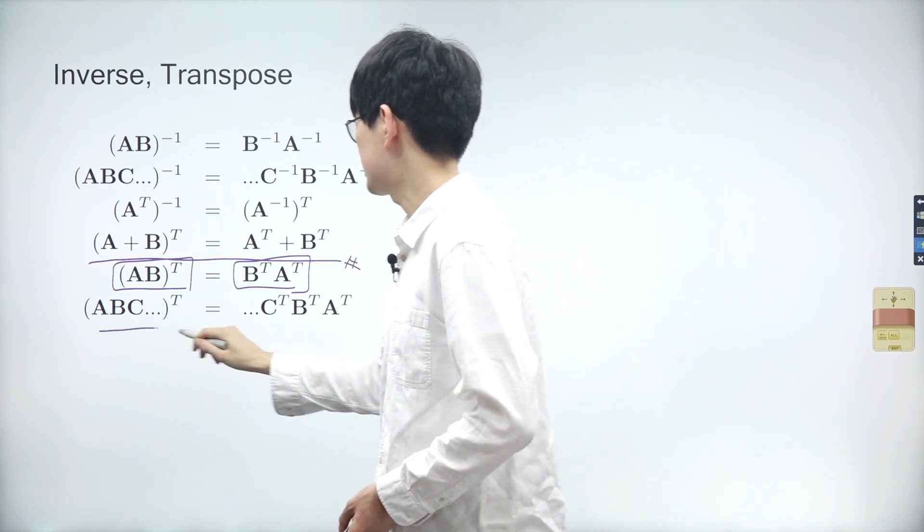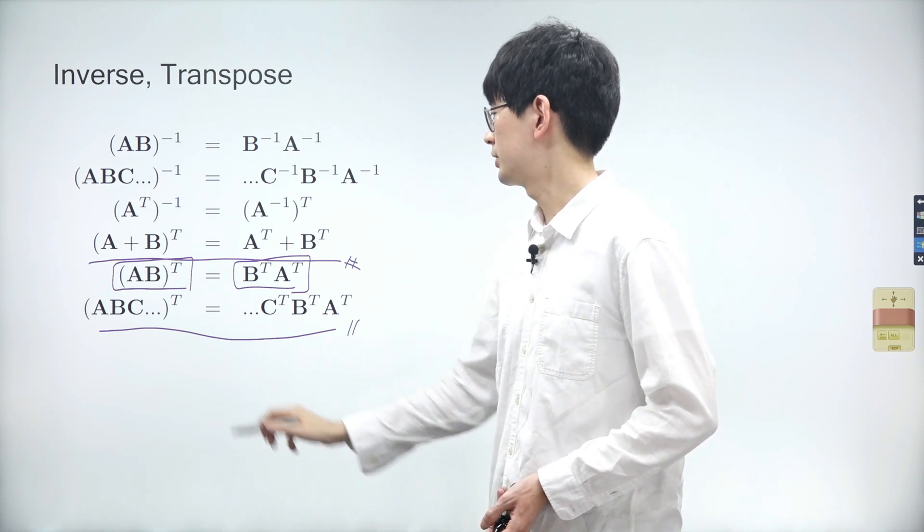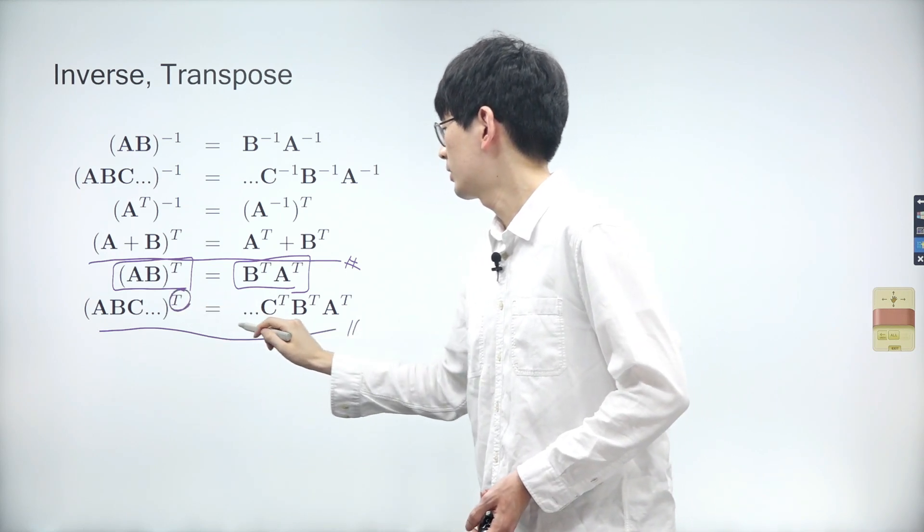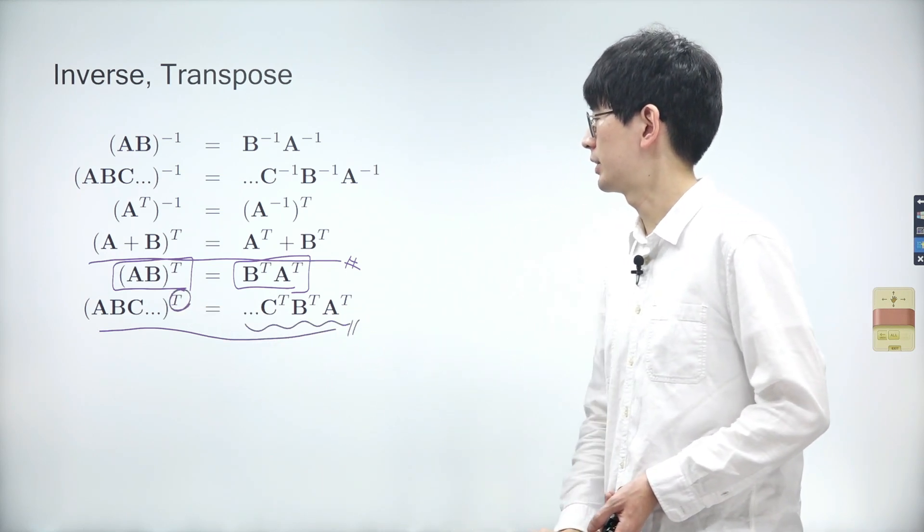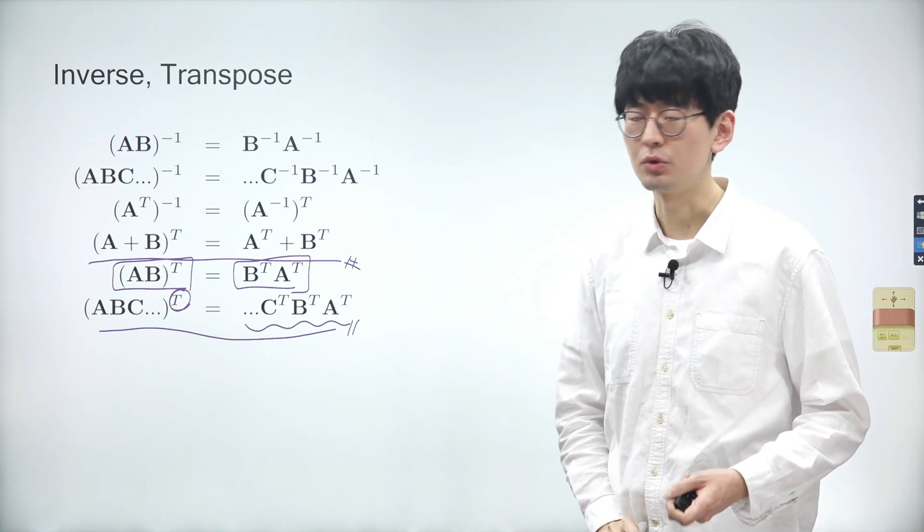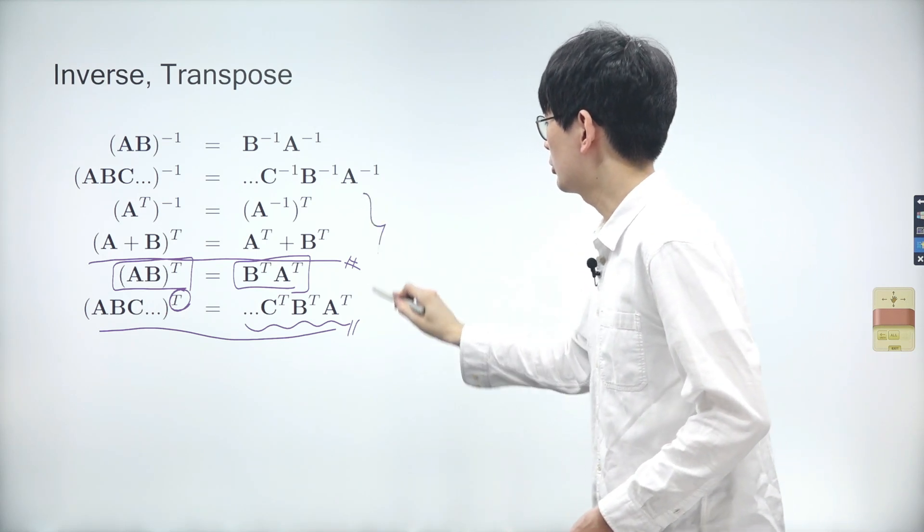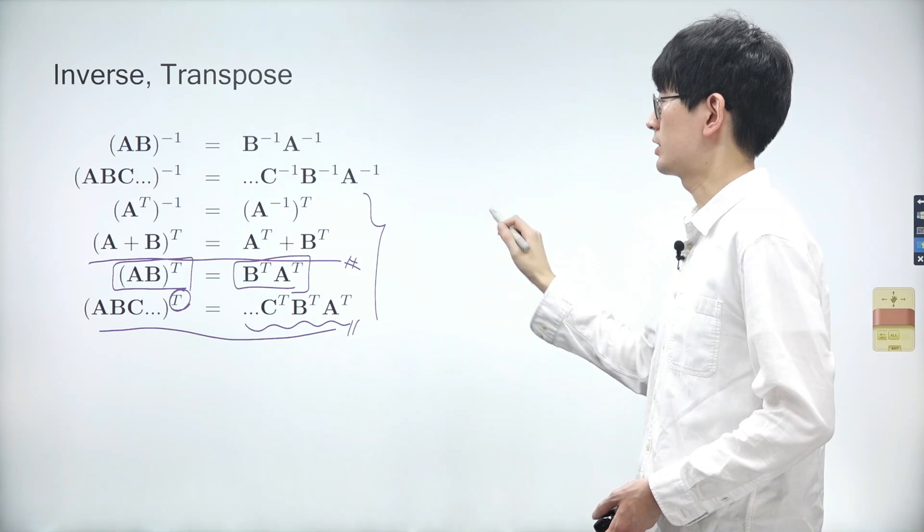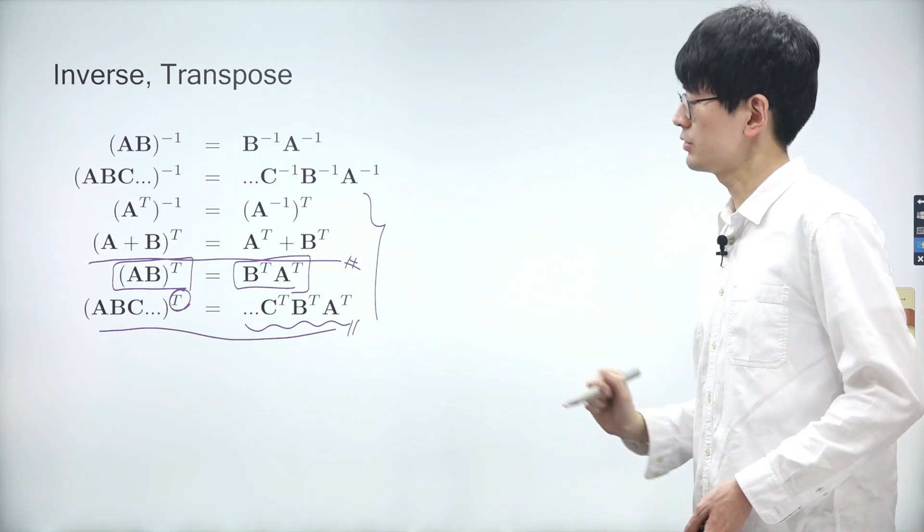Our last property is also similar to the previous one. The transpose of the product of multiple matrices is equal to the product of the transposed matrices in reversed order. Although we have improved the last four properties, it's important to memorize them.